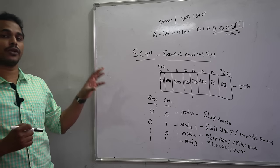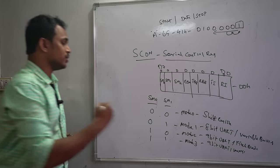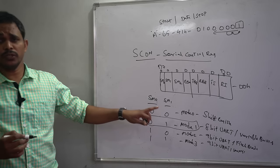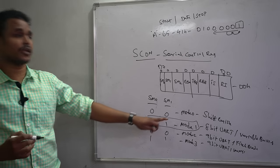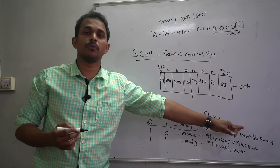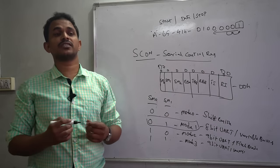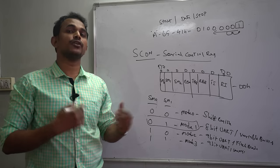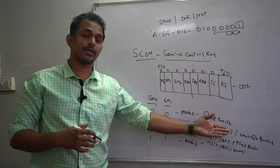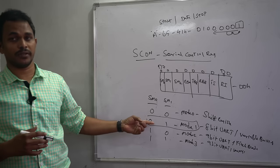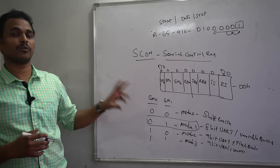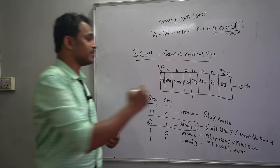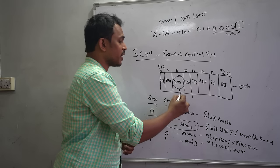Mode 1 is the best option for most applications because it supports 8-bit data with a variable baud rate. Since the baud rate of the external device may not be known in advance, Mode 1 allows you to change the baud rate in software. Therefore, Mode 1 is the most preferable mode in SCON register programming.